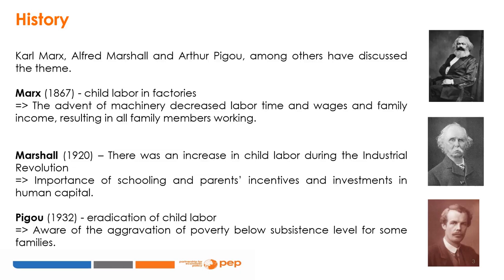In 1867, Marx wrote about the incidence of child labour in factories, describing that with the advent of machinery, decreased labour time and consequently wages and family incomes meant all members of a family were having to work to make ends meet. Marshall wrote in 1920 about a large increase in child labour in the Industrial Revolution and the importance of schooling, arguing that parents should be incentivised to invest in human capital. In 1932, Pigou defended the eradication of child labour, but was aware of the aggravation of poverty when poor families fall below subsistence level.